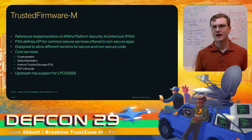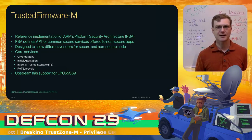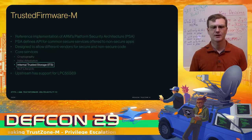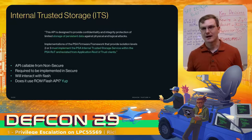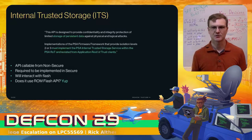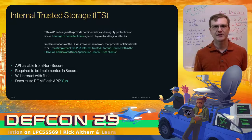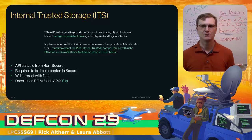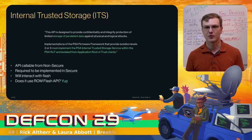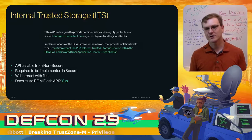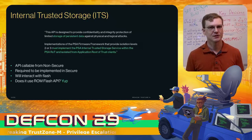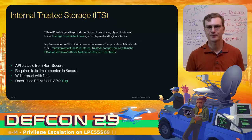Trusted Firmware M has upstream support for the LPC-55-S69, so I could just grab it and build it. The piece we're really interested in is the internal trusted storage, or ITS. It deals with persistent data and is required to be implemented in the secure world in most implementations of Trusted Firmware M. This gives us an API callable from the non-secure space, required to be in the secure world, and it will interact with persistent data storage — which means it will touch the flash. Does this have a good chance of using a ROM API? Yes, it does — it uses the ROM Flash API.